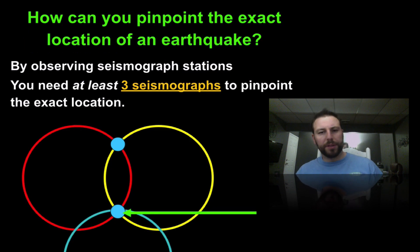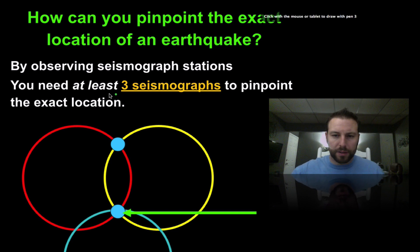We can pinpoint the location of an earthquake or find the epicenter by gathering information from at least three seismographs. With that we do this process called triangulation.